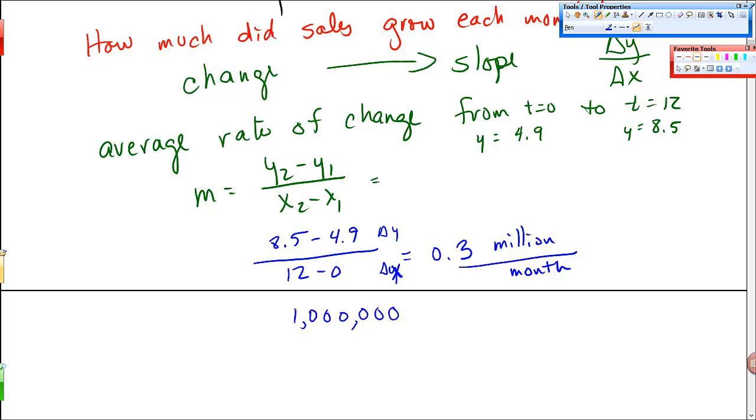And usually we don't say 0.3 million, but do you guys remember, if this is the millions place, like let's say here I have 0, 0, 0, 0, 0, 0, and there's 1 million. So 3 million is, or 0.3 million is right here. It's really 300,000, right? Because you have this point that's where you imagine the point, and so there it is, $300,000 in growth of sales each month on average.